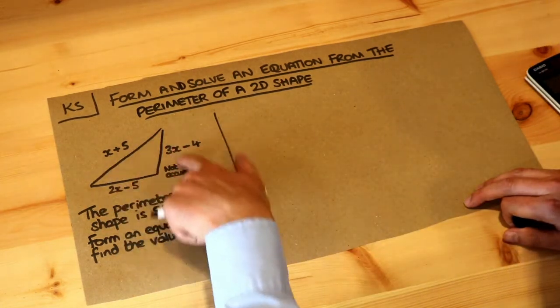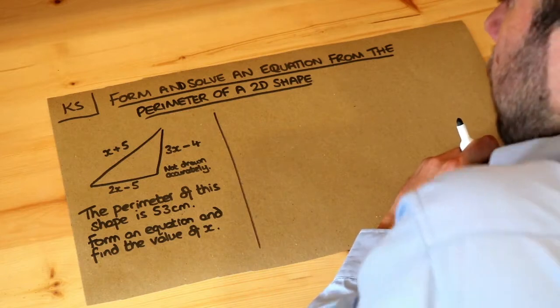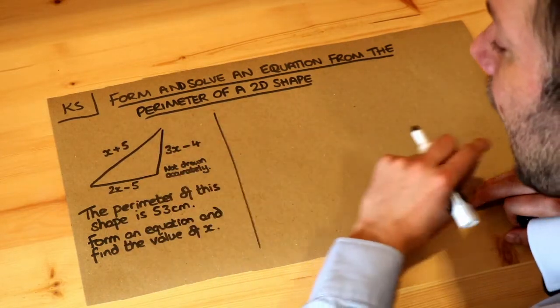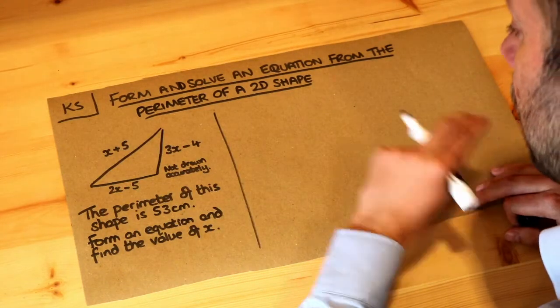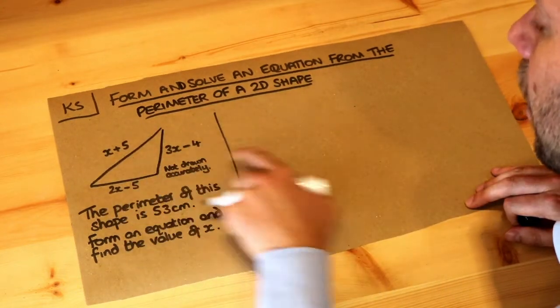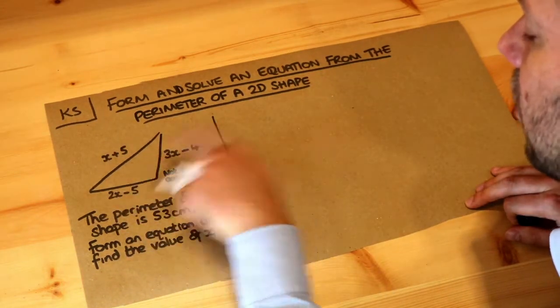So we've got this 2D shape here, in this particular case a triangle, and we've got three algebraic lengths. So instead of just a specific number for the lengths, we've actually got an expression in terms of x.